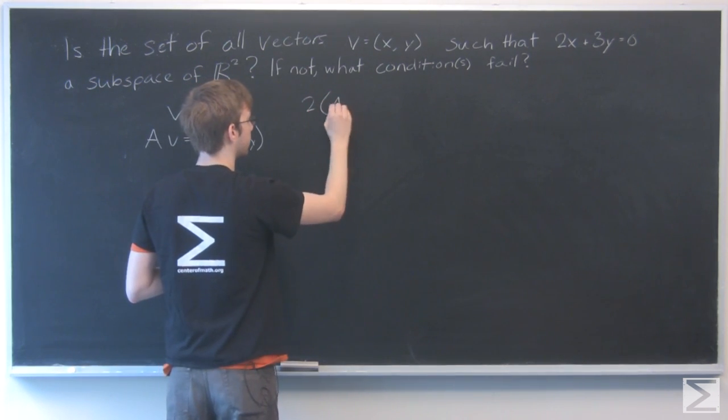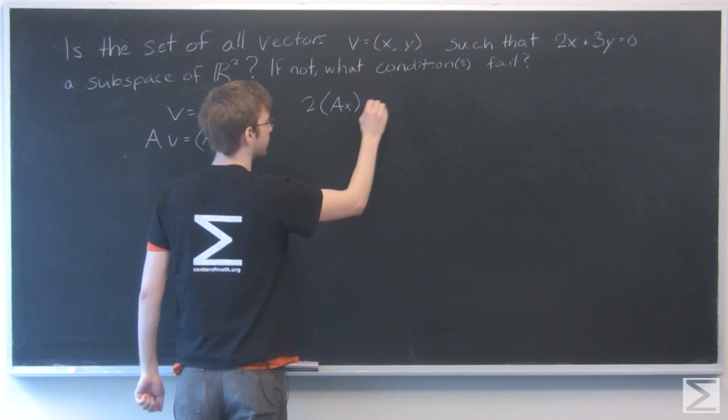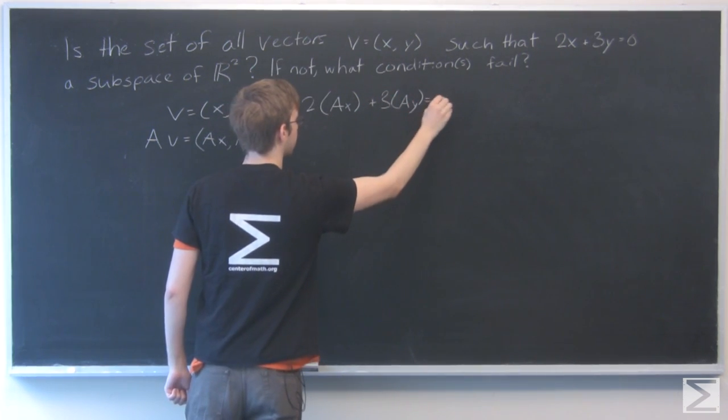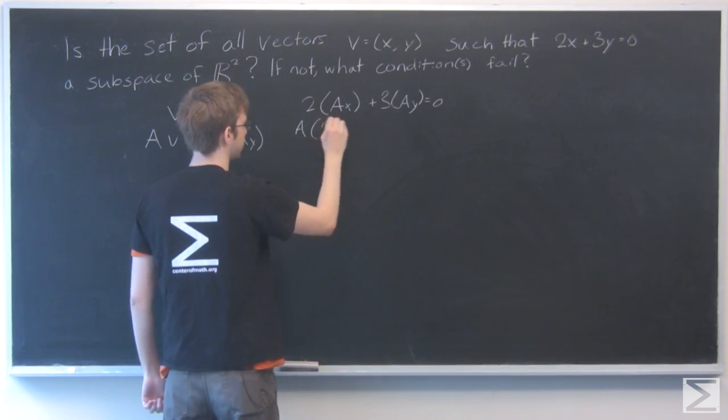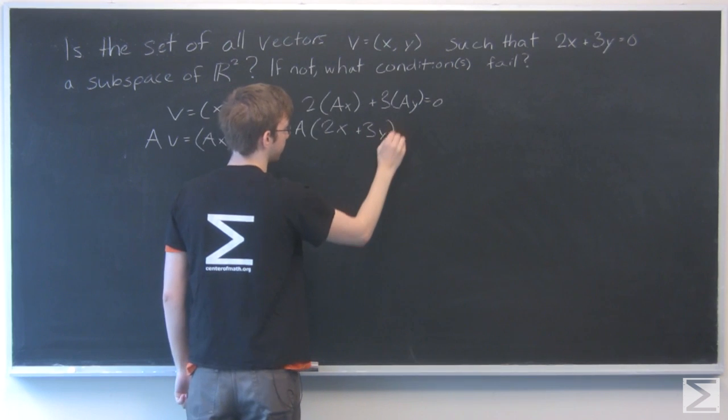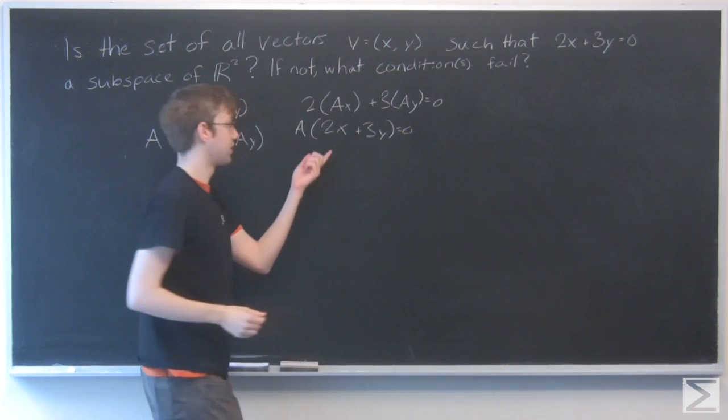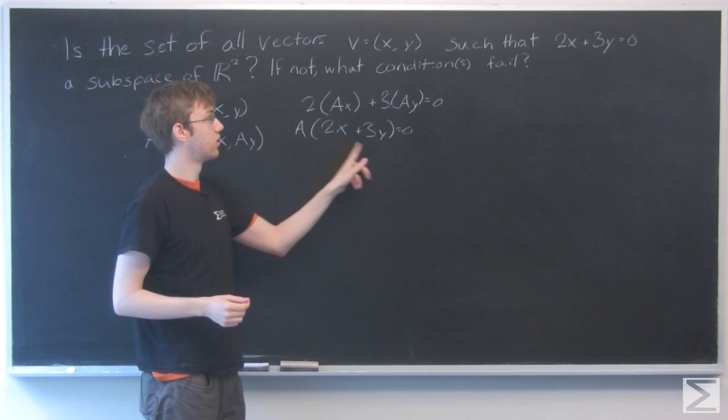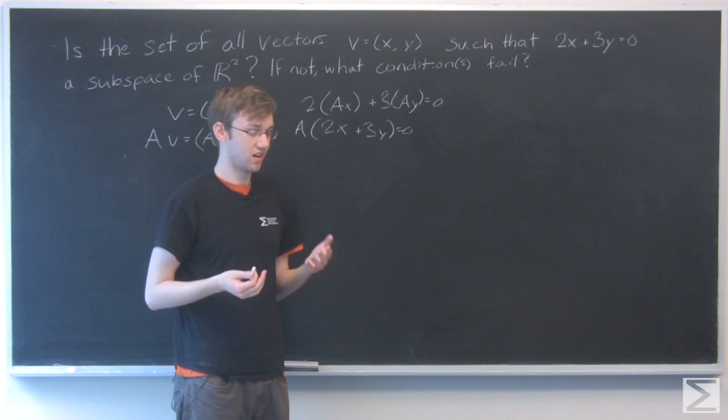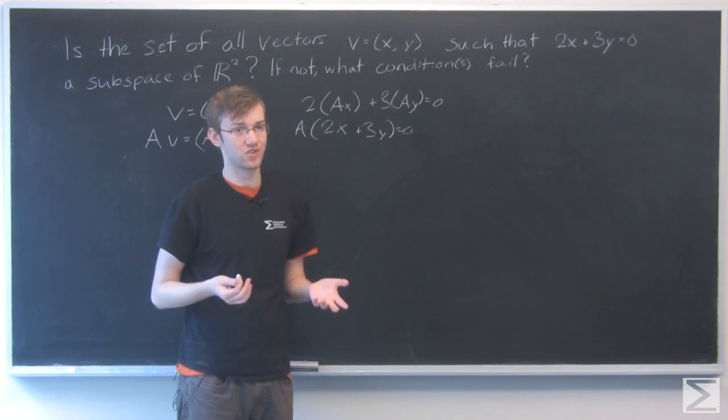We have 2(ax) + 3(ay), and I can factor out an a, which gives me a(2x + 3y). As we can see, this is just a times what we already know to be 0. So yes, scalar multiplication does hold.